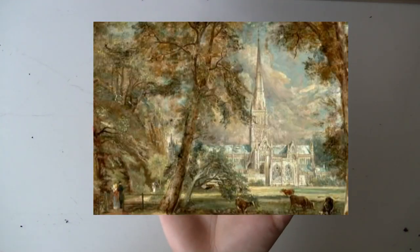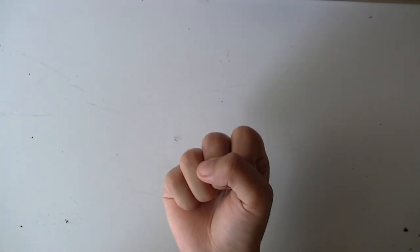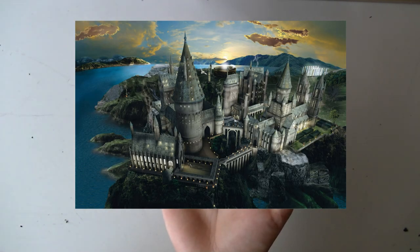The Salisbury Cathedral in England is a fine example of the English Gothic architecture. And of course, Hogwarts was also designed in a Gothic way.